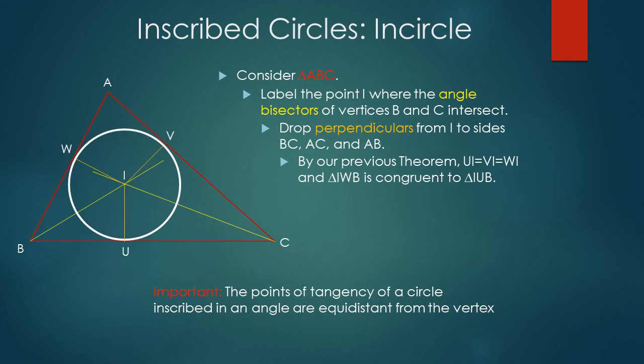Now we move on to inscribed circles, or the incircle. We consider triangle ABC and label the point I where the angle bisectors of angles B and C meet. Next, we draw perpendiculars from the point I to the triangle sides. We will call the points where the perpendiculars meet the sides U, V, and W. Now we know by our previous theorem that UI is equal to VI is equal to WI, and thus triangle IWB is congruent to triangle IUB.